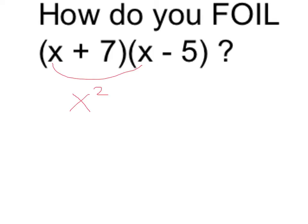First term times first term is x times x, or x squared. The outer would be x times minus 5. Remember we take the negative, the minus as a negative, so that gives us minus 5x.